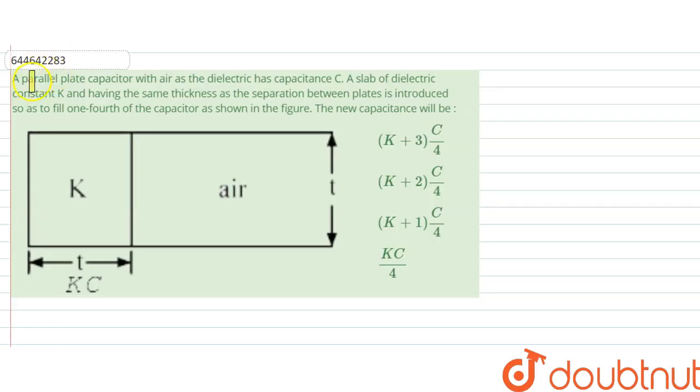The question says a parallel plate capacitor with air as dielectric has a capacitance C. A slab of dielectric constant K having the same thickness as separation between the plates is introduced, so it is of same thickness.